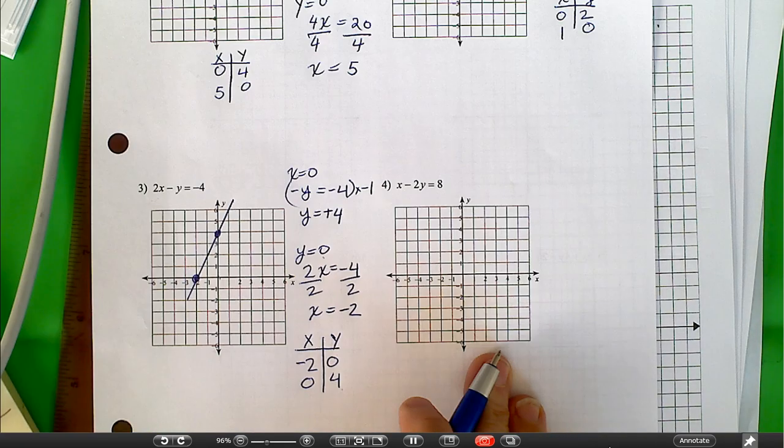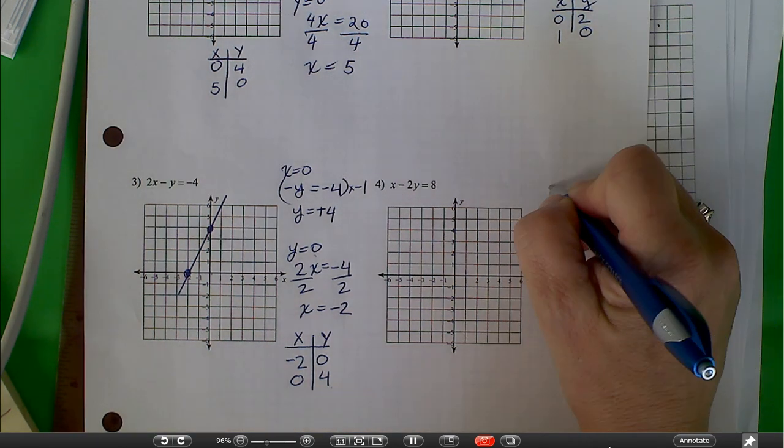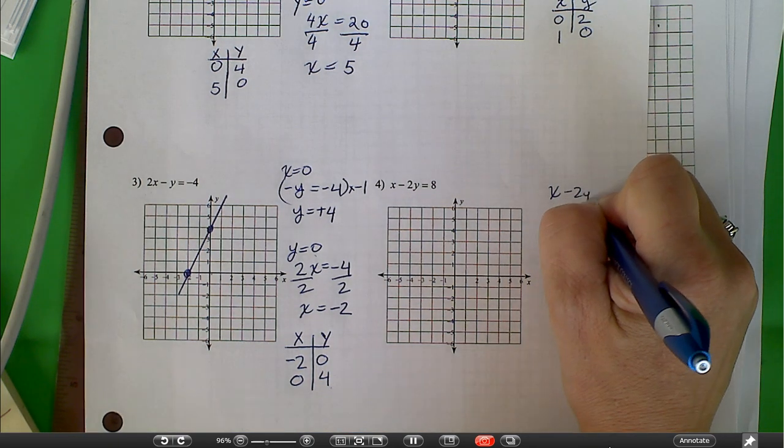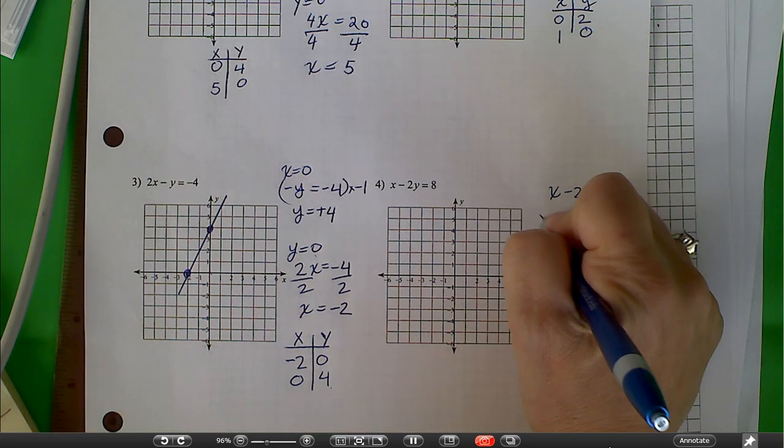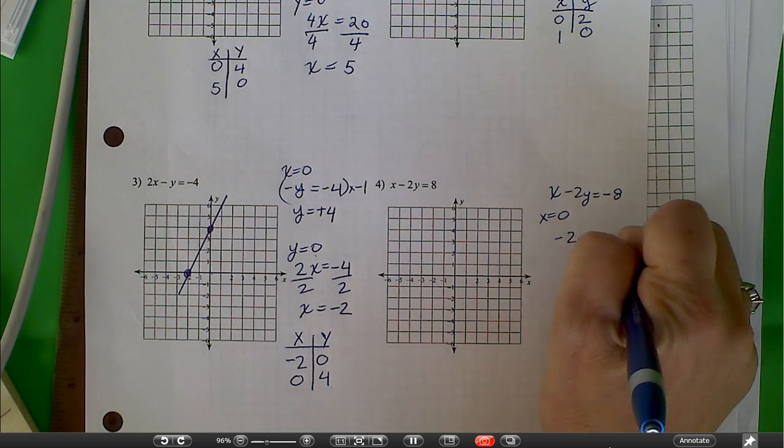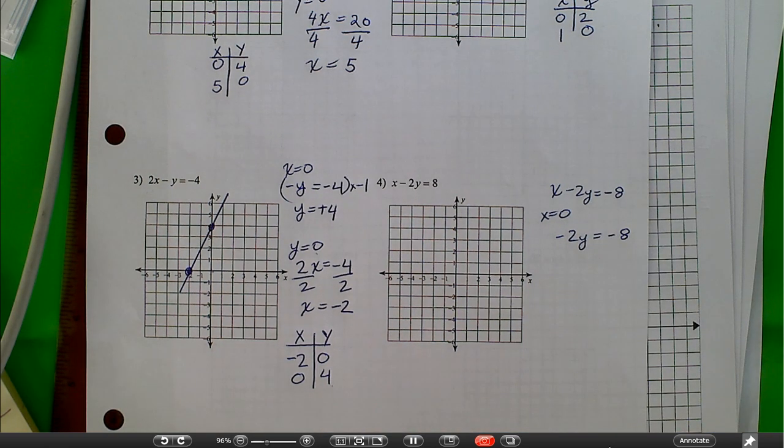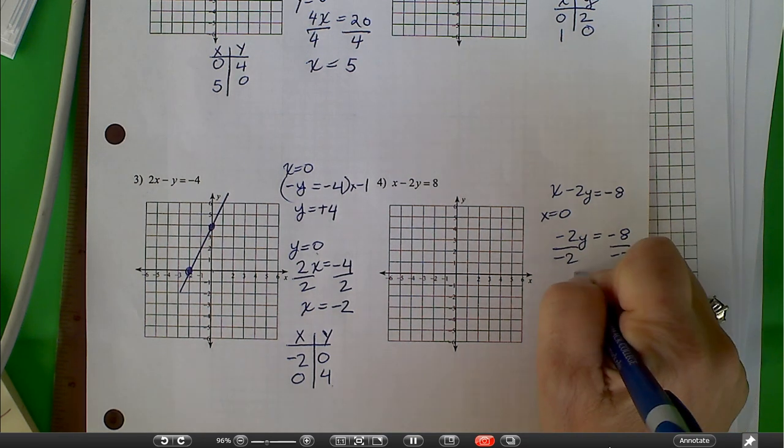Last one that I'm going to do with you on a video is x minus 2y is equal to negative 8. When x is equal to 0, we get negative 2y is equal to negative 8. And I divide both sides by negative 2. And I get y.